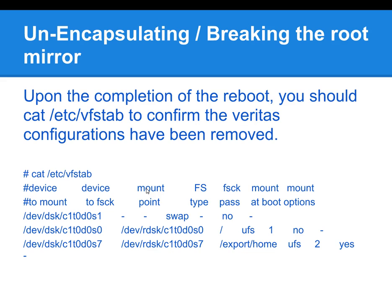Once you complete the task, if you look in /etc/vfstab, you'll see that the Veritas configurations have been removed. It probably would have been a good idea to show you the Veritas wrappers in an earlier slide, but just know that before, in /etc/vfstab, instead of it being /dev/dsk and so on, there was a VxDisk entry. The devices such as C1T0D0 were actually wrapped into the Veritas containers. Now that the Root Mirror has been unencapsulated, /etc/vfstab has been updated.